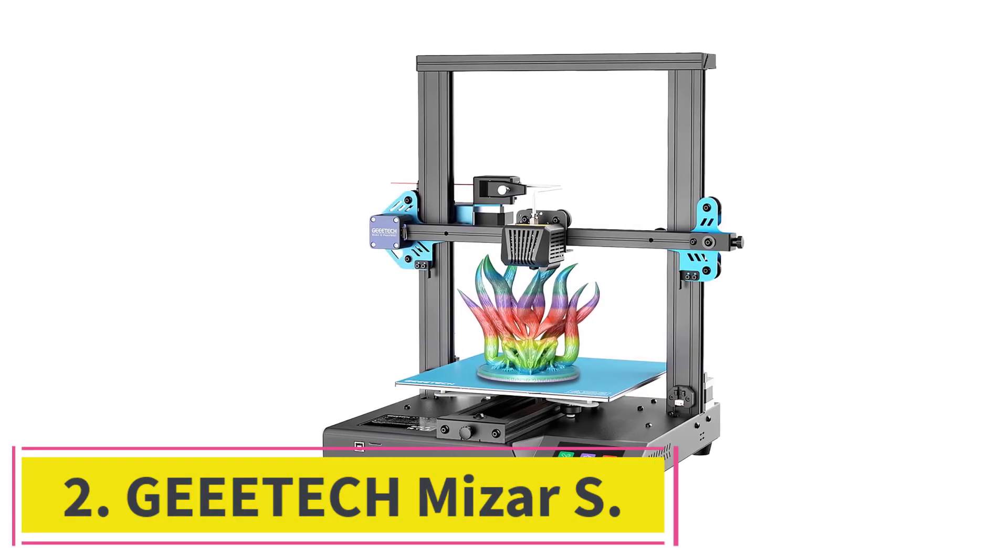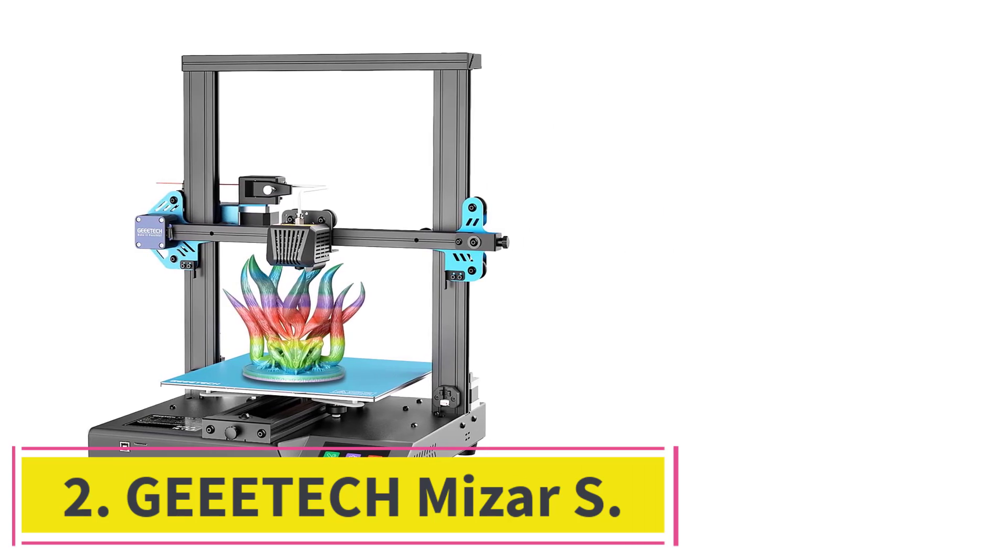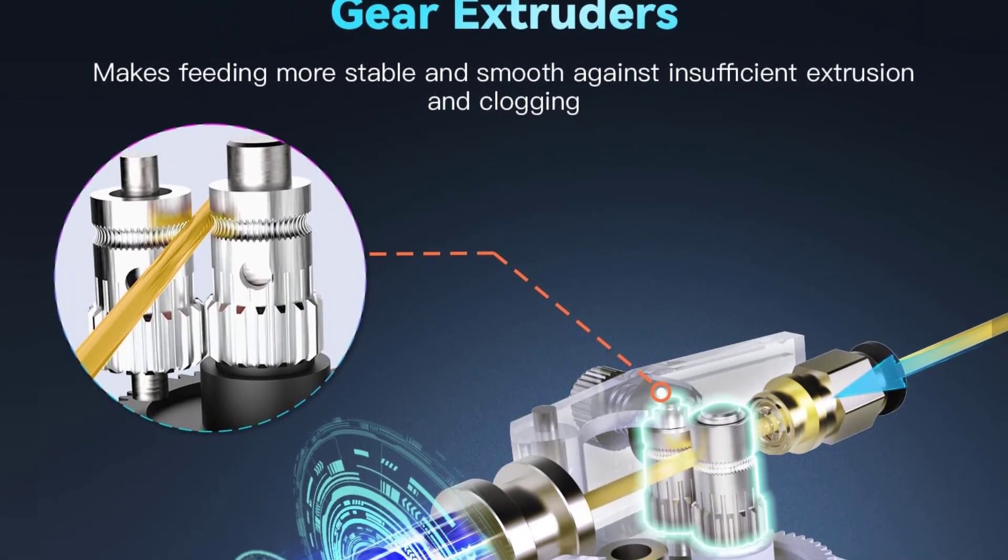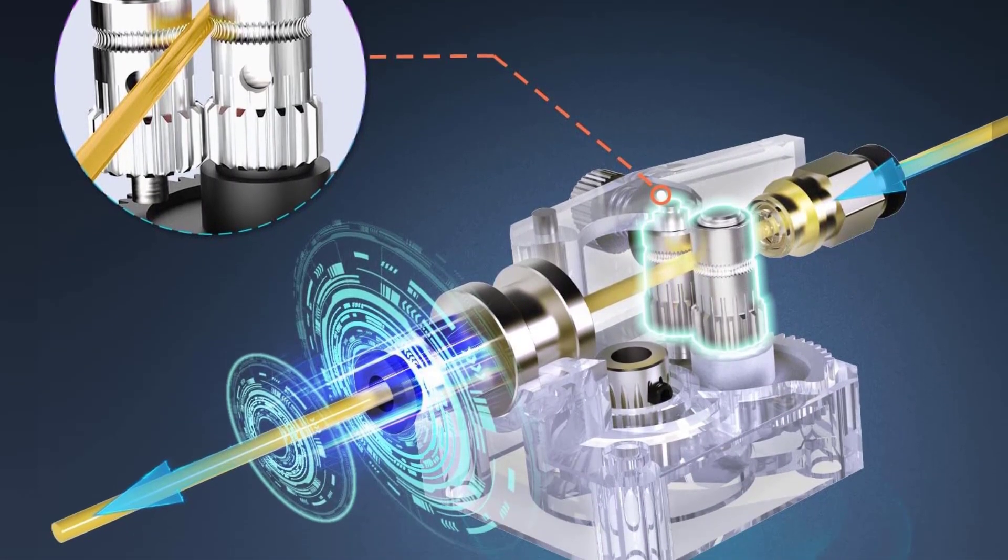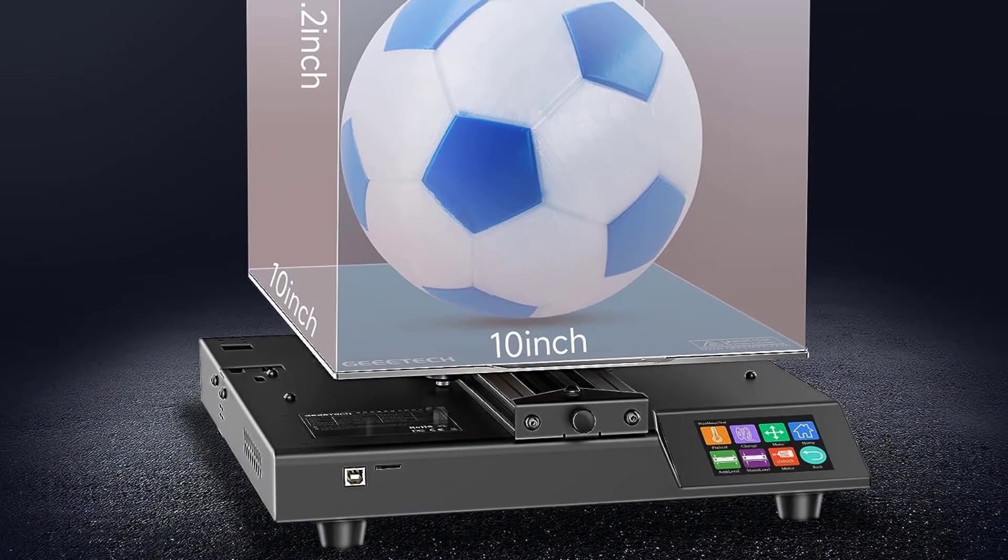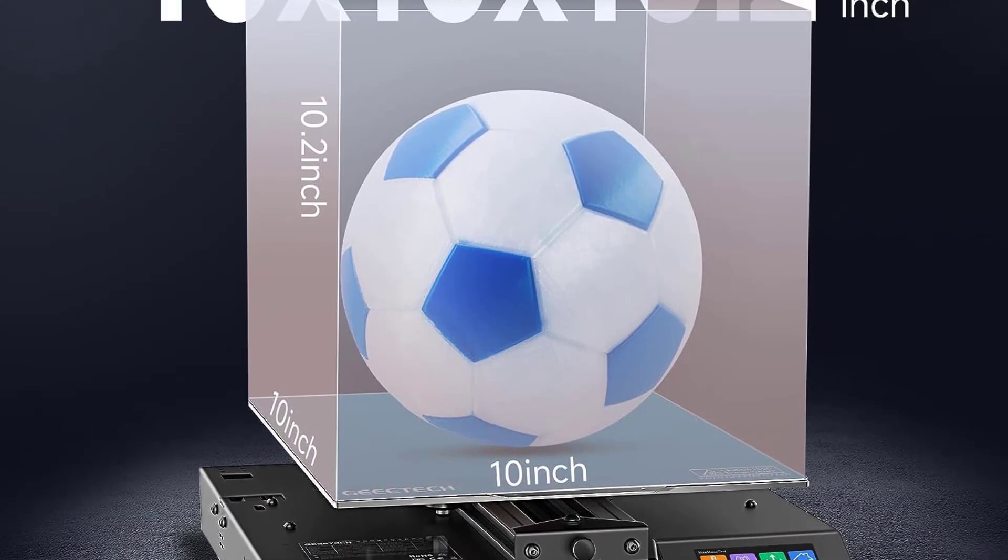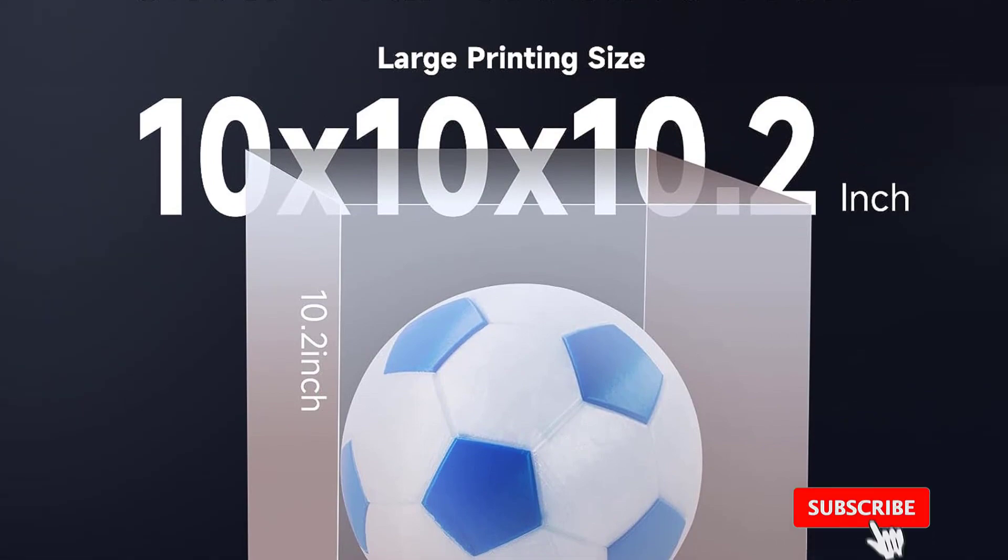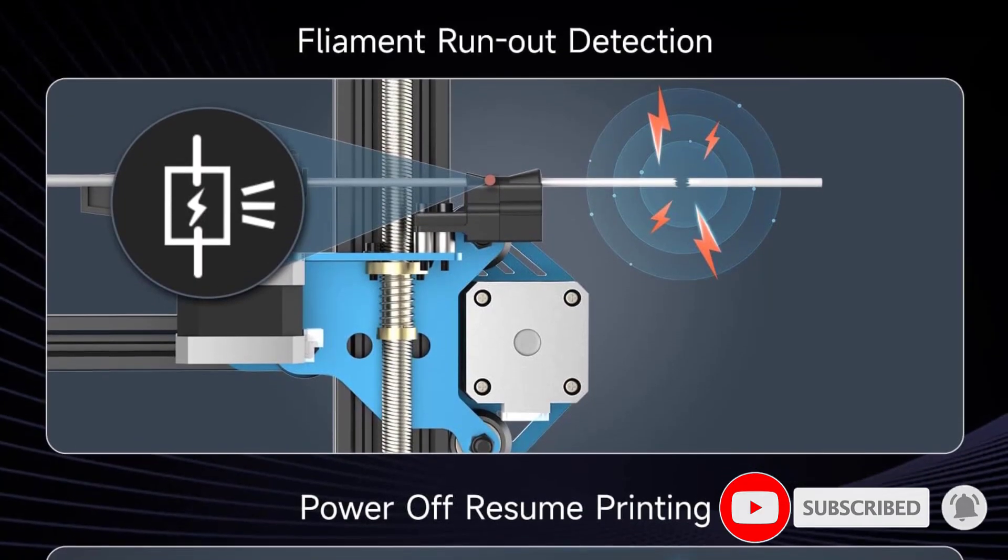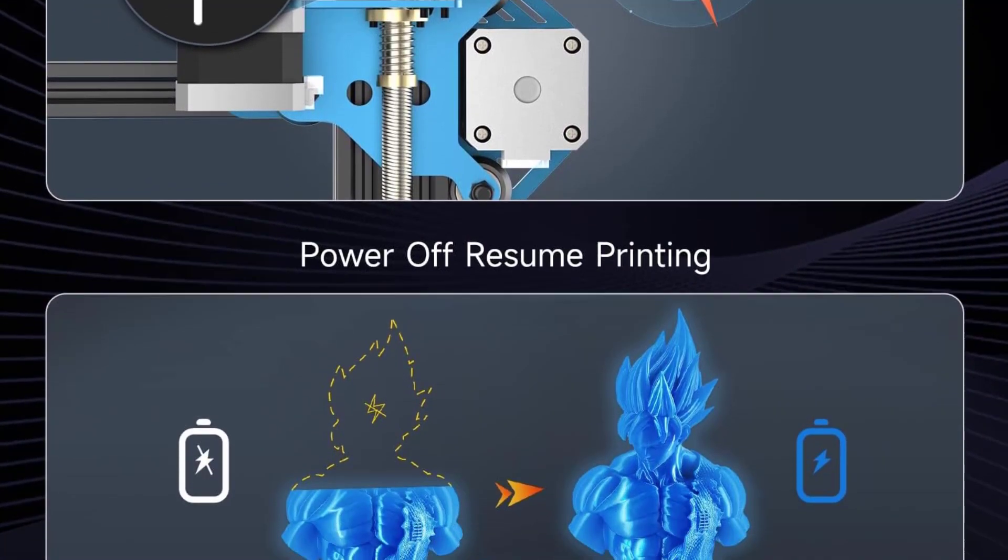At number 2, Gitec Mizar-S. The Gitec Mizar-S is a high-quality, affordable 3D printer that is perfect for both beginner and experienced users. This 3D printer offers great print quality, with a minimum layer thickness of 0.1 mm and a maximum resolution of 100 microns. Additionally, this 3D printer comes with a touchscreen interface and an easy-to-use menu system, making it very user-friendly.